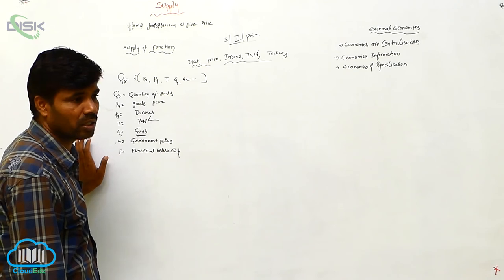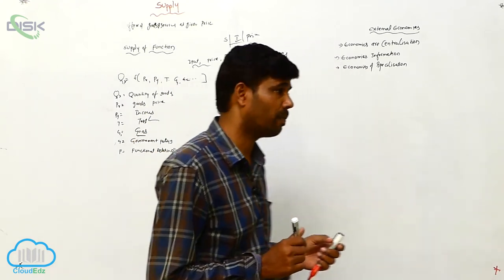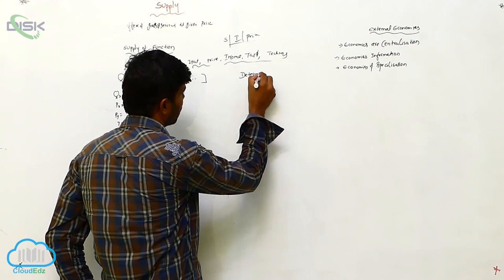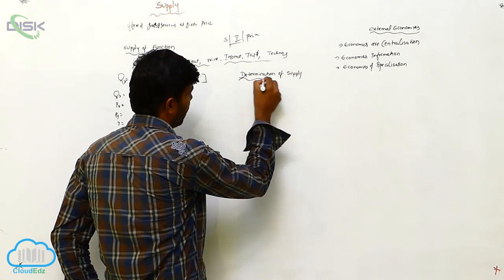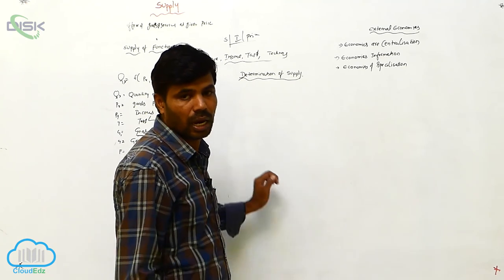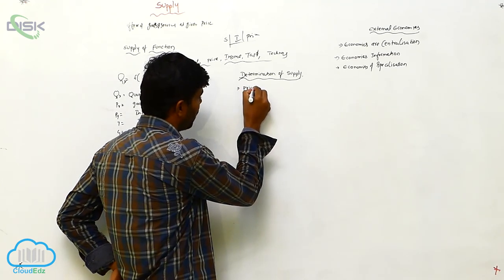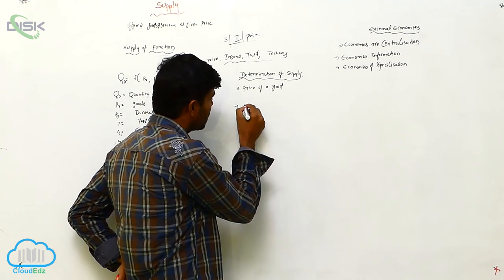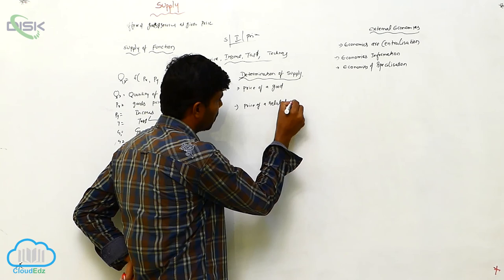Now the next topic is determination of supply. We have certain determinants. The relationship between supply of a commodity and its determinants — the first is the price of a good, and the next is the price of related goods.